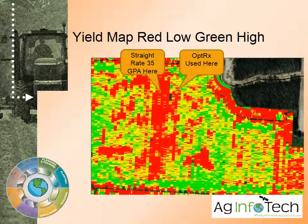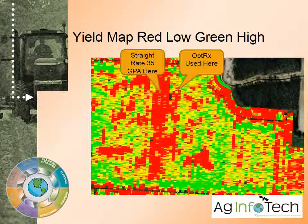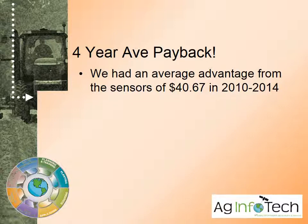This is an example of a yield map. The green areas are the better yields and the red areas are the poorer yields. You can see where we put a straight rate of 35 gallons per acre. The Optric system came in and actually put more nitrogen in some areas, and in other areas it actually reduced or even put zero nitrogen. Over a four-year payback period, we've used less nitrogen consistently but been able to increase yields. We've had an average advantage from these sensors of $40.67 per acre from testing done from 2010 to 2014.